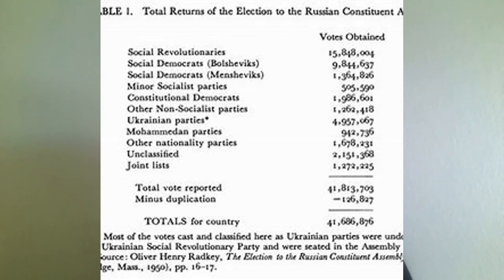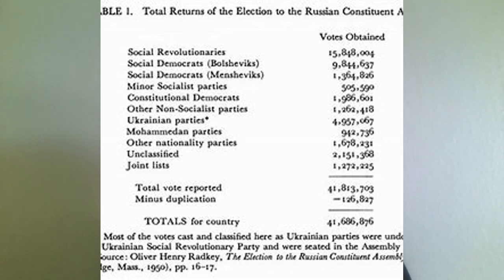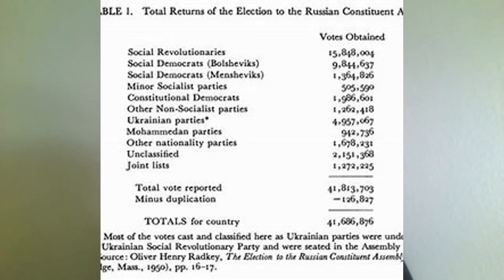The educated working class — the qualified workers, the printers, the railroaders and others — they stayed with the Mensheviks. Moreover, as I show in my book, Menshevik organizations did expand during this time. So it was a defeat of the Menshevik party in terms of all of Russia, but not in terms of the working class. The majority of qualified workers, and those who had been workers four years earlier — not the new arrivals — they stayed with the Mensheviks.